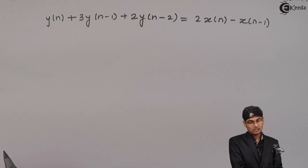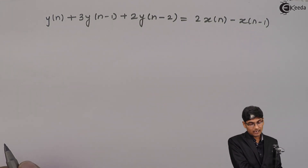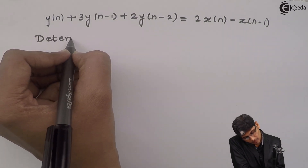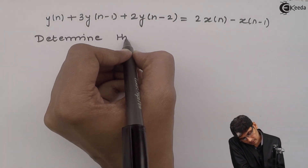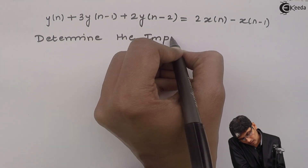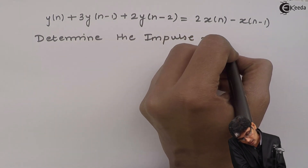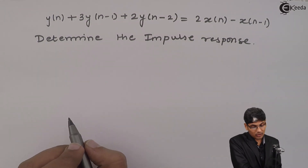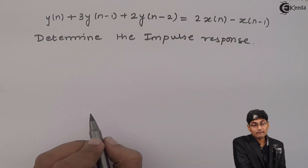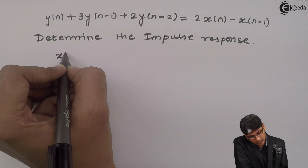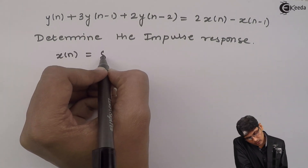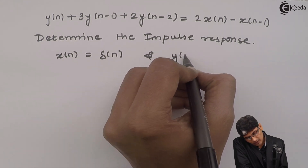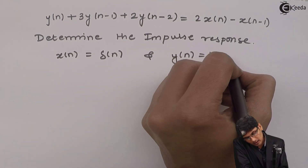This is my difference equation and the problem asks me to determine the impulse response. We know that whenever we say impulse response, x(n) = δ(n) and y(n) = h(n).